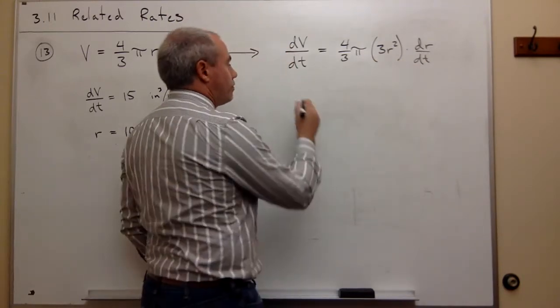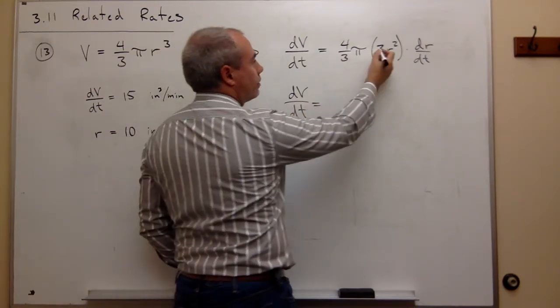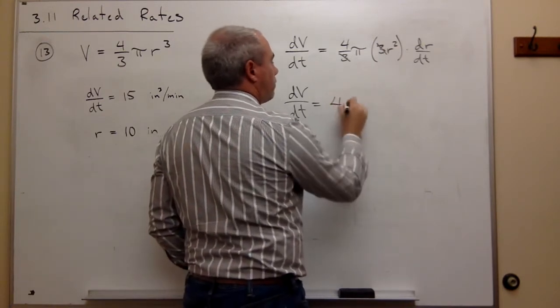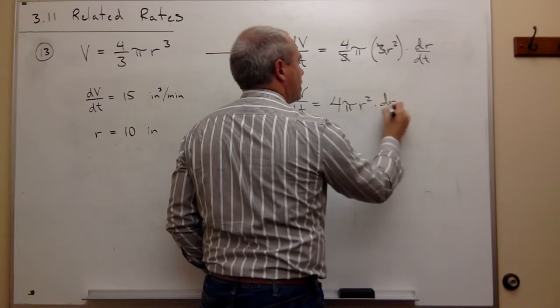If I wanted to, I could clean this up a little bit and write that dV/dt is equal to—the 3 on the bottom and the 3 on the top cancel—and I just get 4π r² dr/dt.